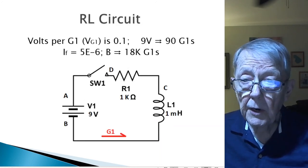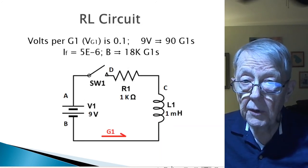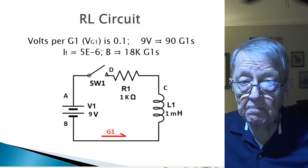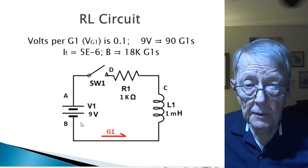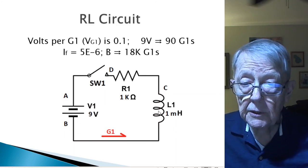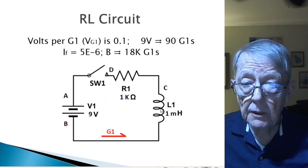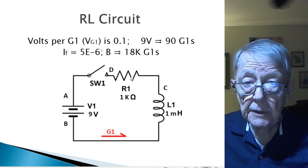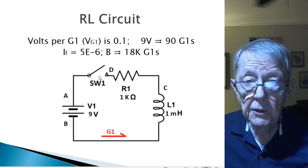We're going to analyze today the resistor-inductor circuit. Simple example: 9-volt battery emitting G1s, 1 millihenry coil or inductor, 1 kiloohm resistor, and a switch.